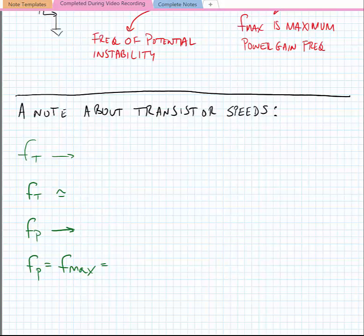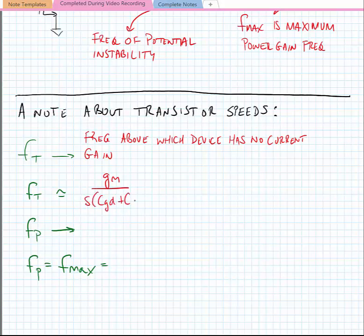So just our notes on transistor speeds. And we may have briefly talked about these before, but the FT is a number that you sometimes hear, and that is the frequency above which the device has no current gain. And this is an important frequency for most devices, and it isn't dependent upon the geometry of the device. FT for a MOS device is equal to GM divided by S times CGD plus CGS. If we're looking at a bipolar device, it's equal to GM divided by S times C pi plus C mu.